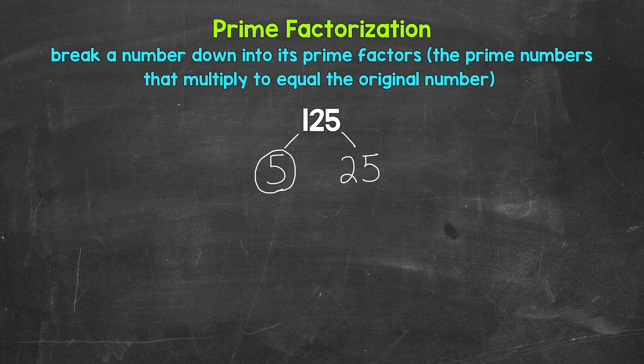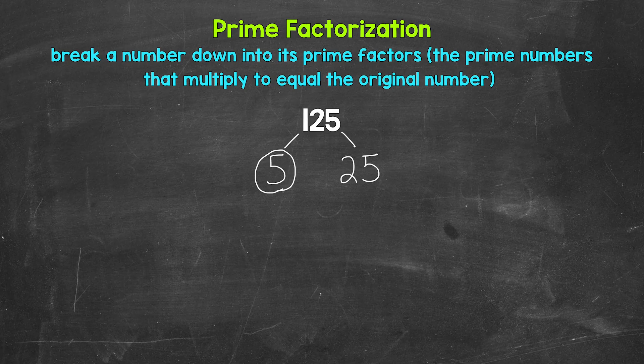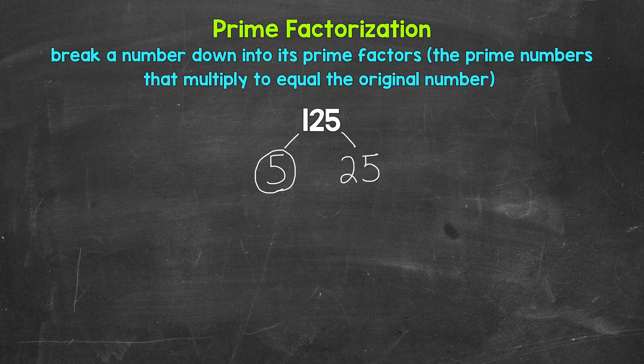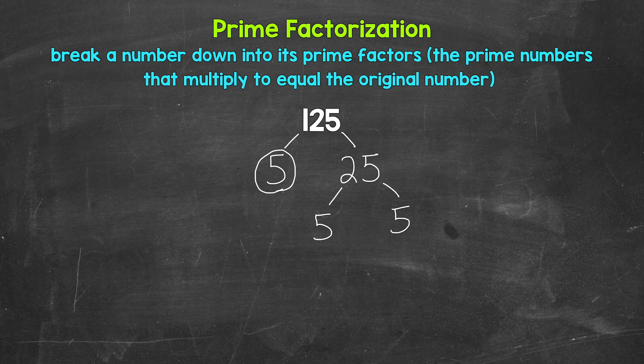25, on the other hand, we can break down. We know that 5 times 5 equals 25. 5 is a factor of 25. So let's break 25 down into 5 and 5. Now 5, again, is a prime number. So we are done here and here. We can't break those down any further.